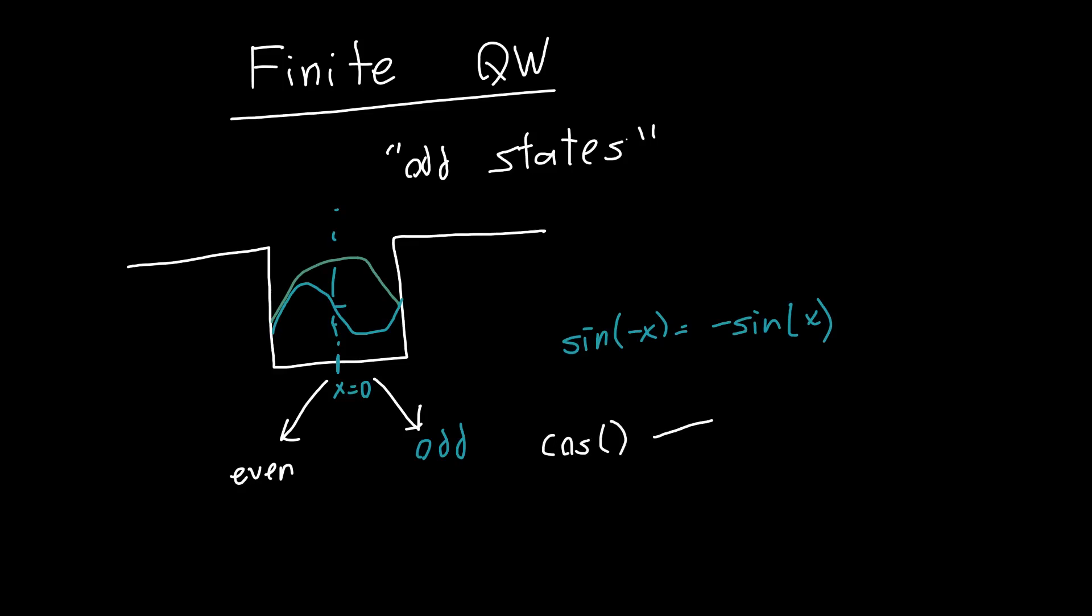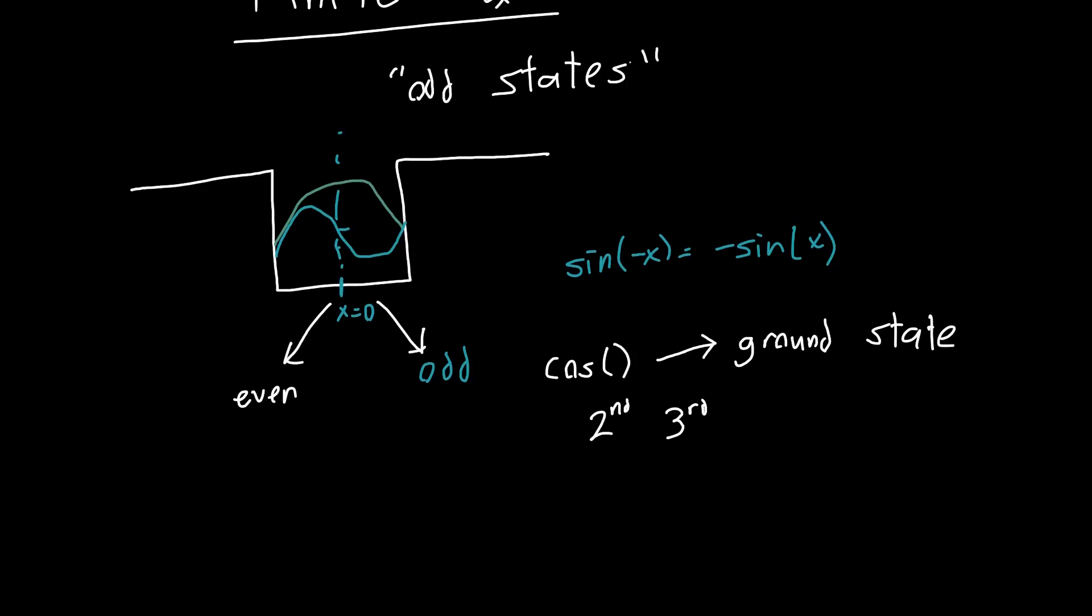The reason for this is because this state will be our ground state. It has no nodes and so this is the lowest energy state but if we want to worry about other states, for example the second excited state or the third or the fourth or so on, we also need to consider the odd states and so how do we do this?